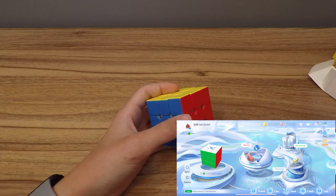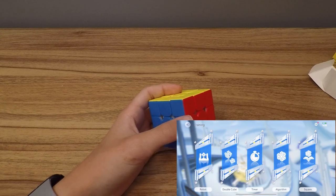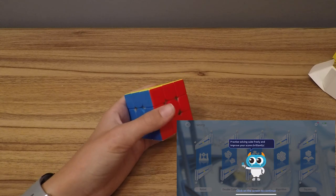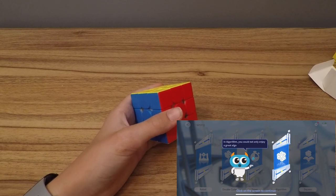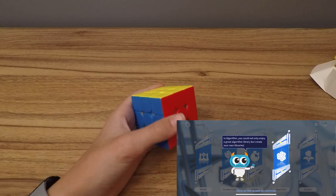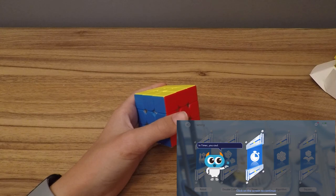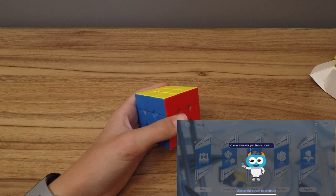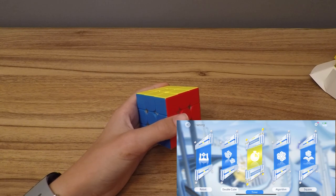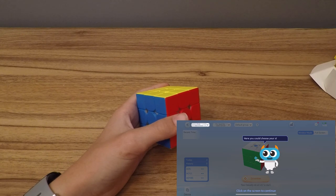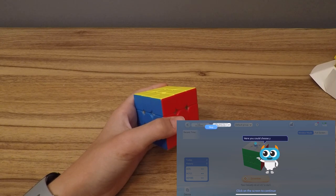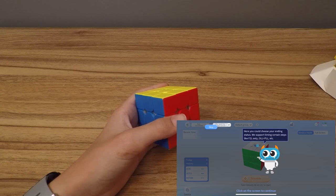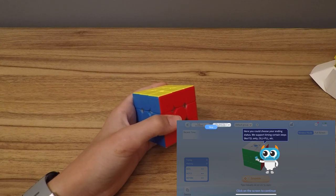The first thing is training. I'm going to try out training. Practice solving cube freely and improve your scores brilliantly. In algorithm, you could not only enjoy a great algorithm library but create your own libraries. That's cool. In timer, you could freely customize the ending status of scramble and solve. Support timing certain steps like F2L only, OLL and PLL, etc. That's actually kind of cool.